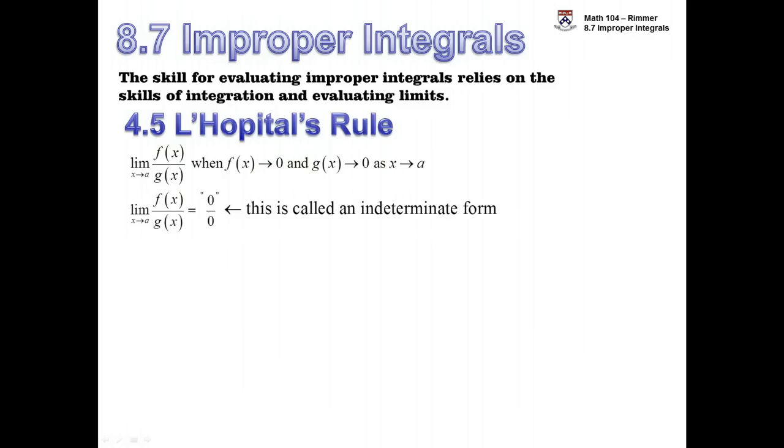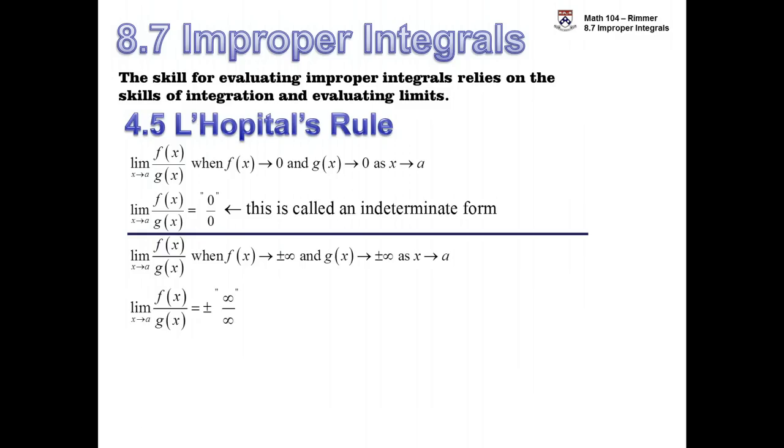Could be 0, could be 1, could be infinity, could be 3. And so we have to deal with that. If we have the same thing happening, but then they're both going to plus or minus infinity as x goes to a, then we have this plus or minus infinity over infinity. We can't treat infinity like a number. We put quotations around it; this isn't a number, it's called an indeterminate form. And the way we deal with it is to employ L'Hopital's rule.